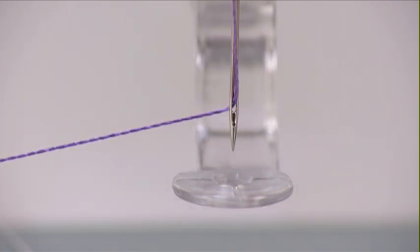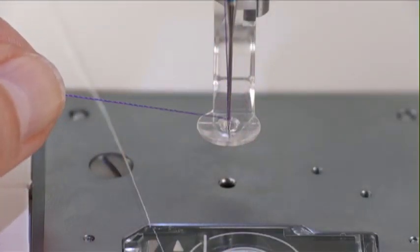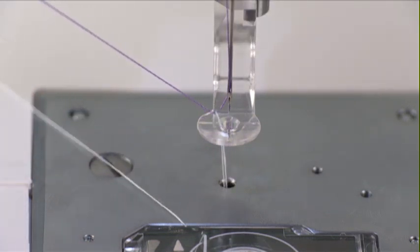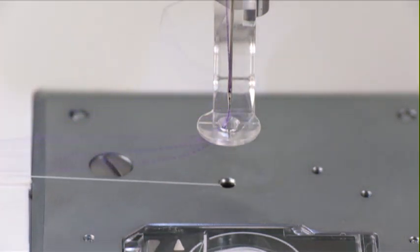To draw up the bobbin thread, turn the handwheel toward you one complete revolution while holding the end of the needle thread. Pull the needle thread to lift a loop of the bobbin thread. Pass the needle thread and draw it up to the thread holder.